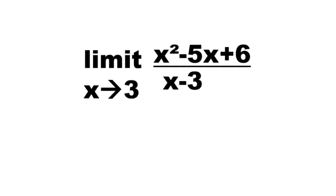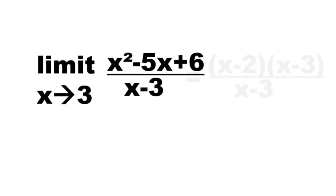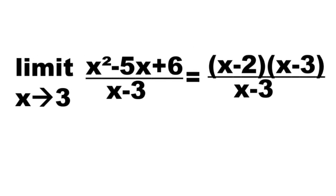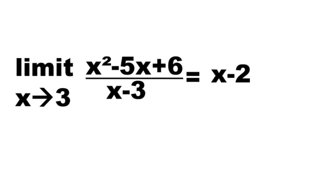To avoid the denominator being 0, factor the numerator as quantity x minus 2 times quantity x minus 3. Cancel x minus 3, leaving x minus 2.